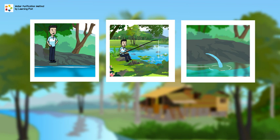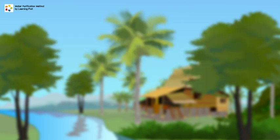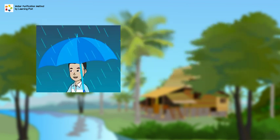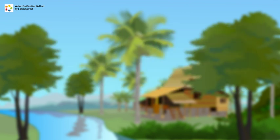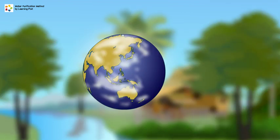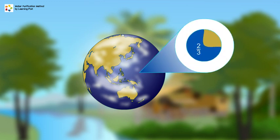Other sources of natural water include rainwater and seawater. Water is one of the most important resources on Earth. It covers about two-thirds of the surface of the Earth.